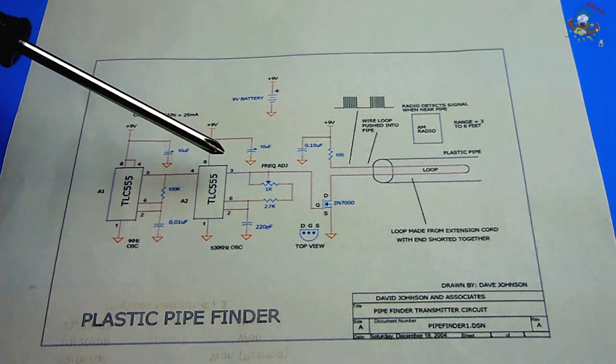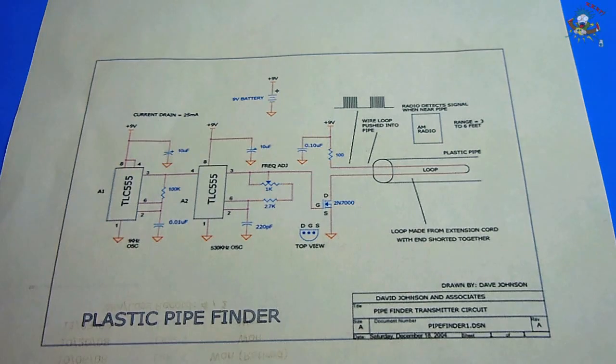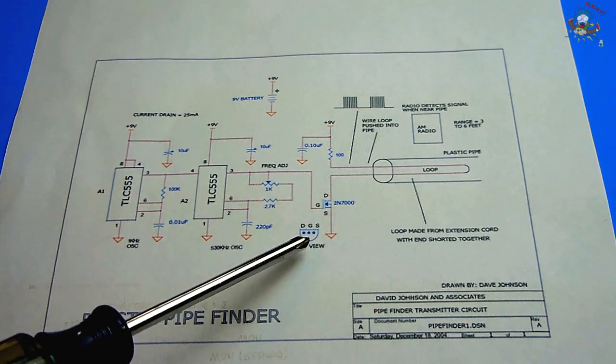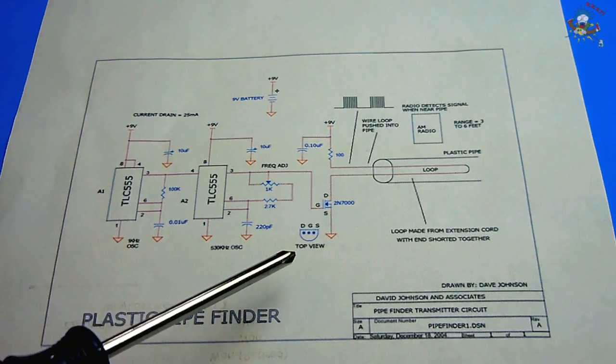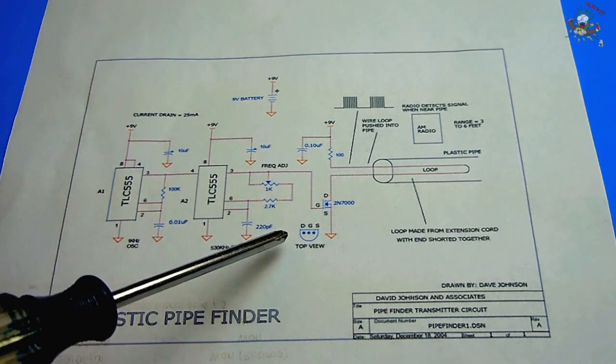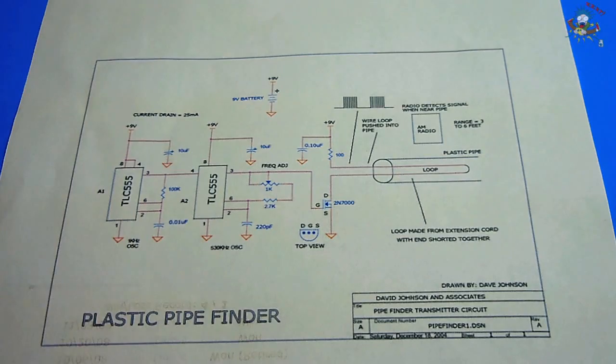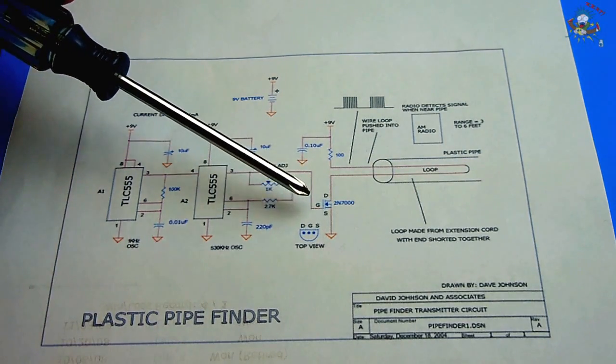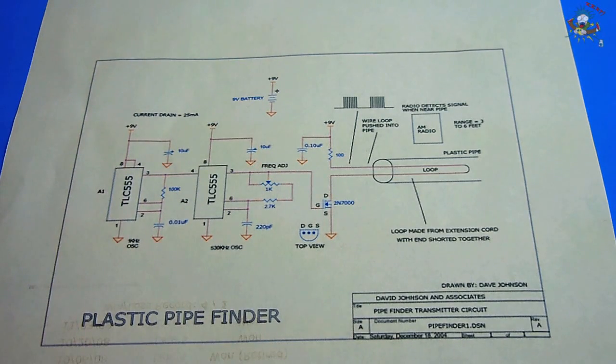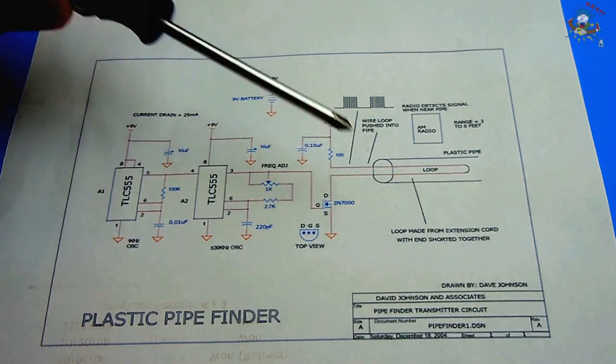The output of that 555 timer goes into the gate of a 2N7000. Over here you can see the top view. Now if you're looking at the bottom view with the legs facing you then it's going to be source gate drain. Looking down at it through the component to see the legs on the bottom it's going to be drain gate source. There's not a lot of current coming off of pin 3 so you're definitely going to have to use the 2N7000 or a BS 170. The range is very impressive, three to five feet away from the wire and the closer you get to the wire the louder the tone becomes and the further away the quieter the tone. So it's very easy to pinpoint the location of a pipe with the wire inside of it.